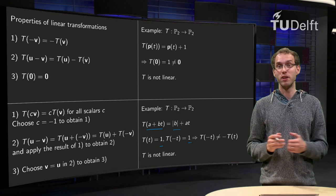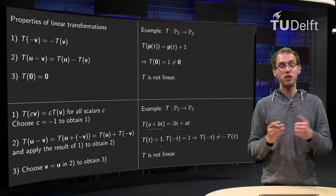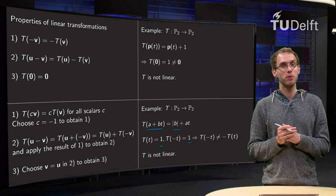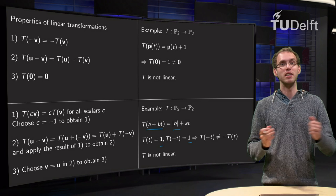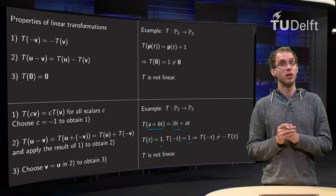Which was required for a linear transformation, so also this transformation is not linear. So there are some natural properties which you can use to see immediately that a transformation is not linear.